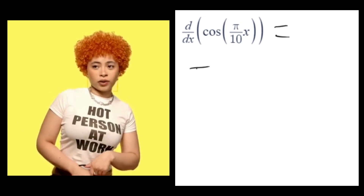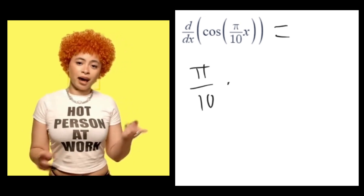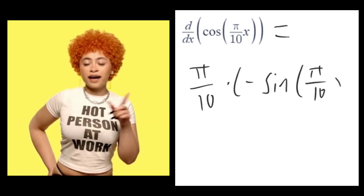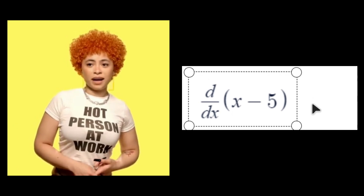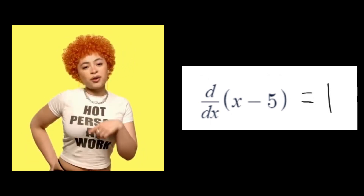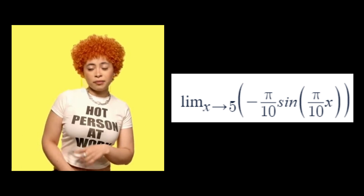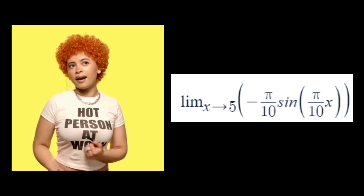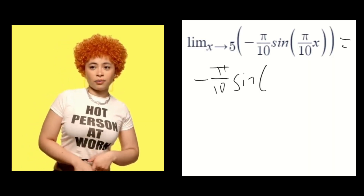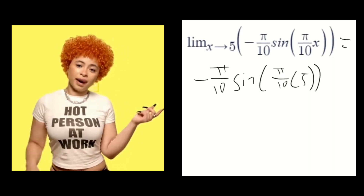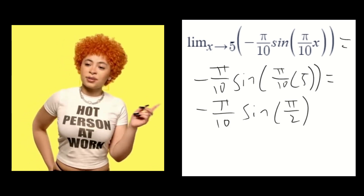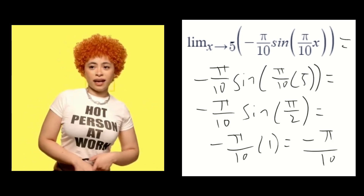Exactly, Travis, you learn quick. So now let's take the derivative of the top and the bottom functions. The derivative of cosine of pi over 10x is pi over 10 times negative sine of pi over 10x. And the derivative of x minus 5 is just 1. So now we have the limit as x approaches 5 of negative pi over 10 times sine of pi over 10x. If we plug in 5, we get negative pi over 10 times sine of pi over 2. Sine of pi over 2 is 1, so our answer is negative pi over 10.